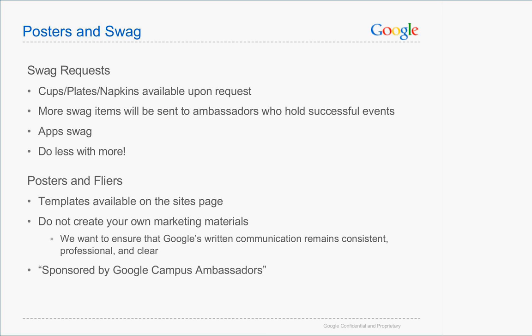Regarding posters and swag: we'll send swag at some points, and toward the end of the semester when we see good events we'll send more if needed. You can always request cups, plates, and napkins. For posters and flyers, we'll be linking poster templates to the sites page and we want you to use only those templates. We need to make sure we're representing the Google brand appropriately — there are rules around using the Google logo. If you need to print anything with the Google logo, have it approved by us first. Teams making large reusable posters with just the Google logo should be fine, but get approval first.